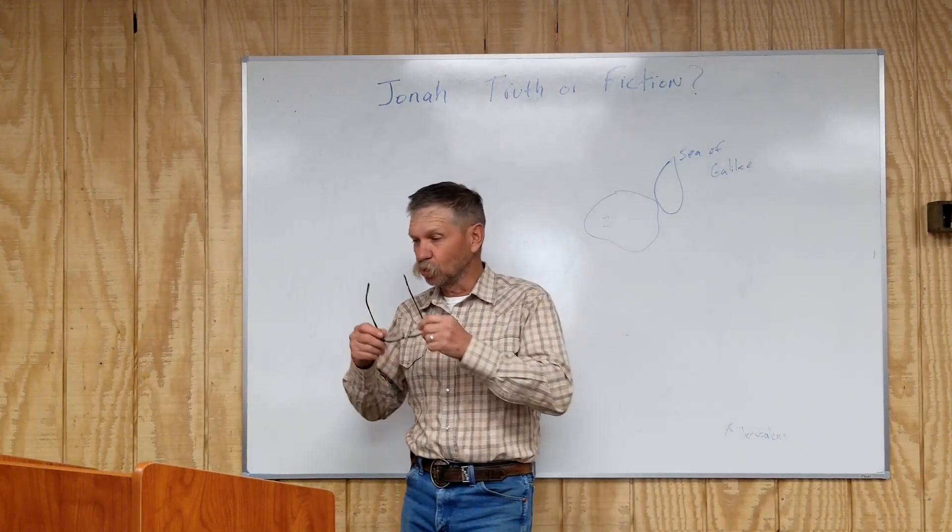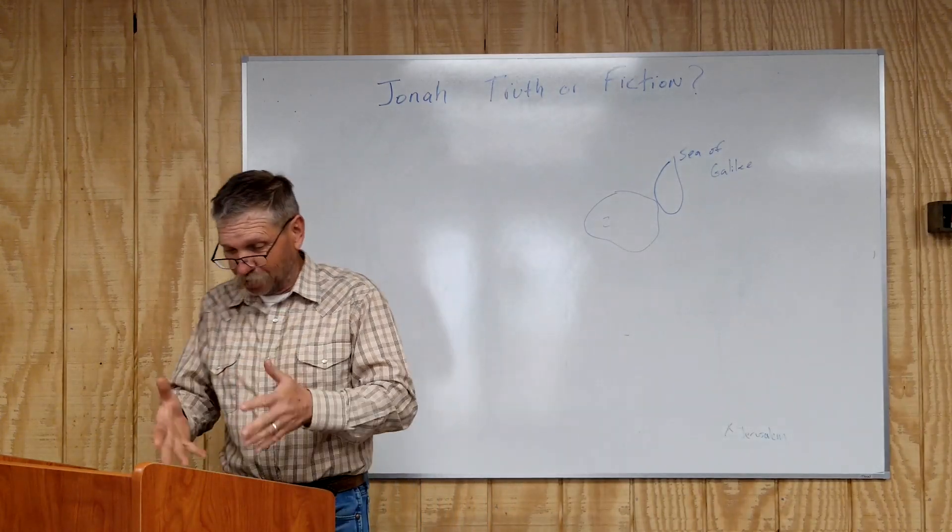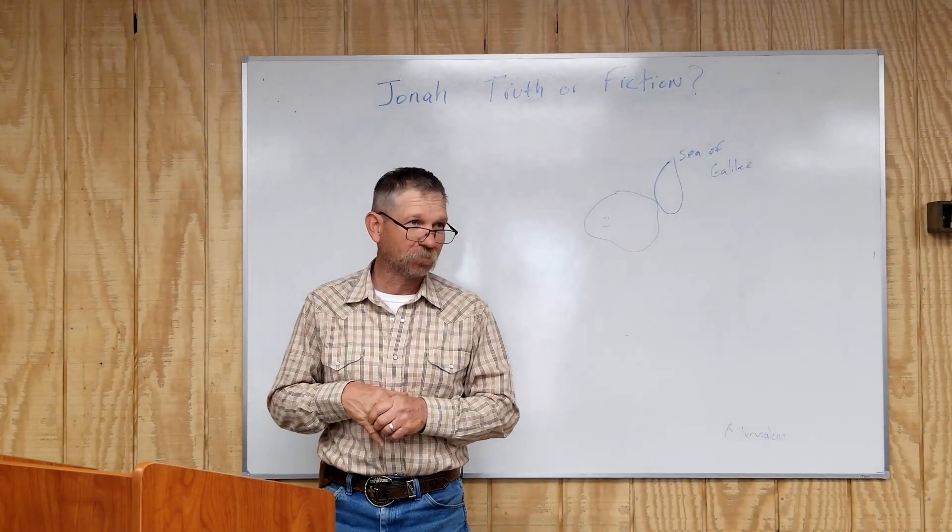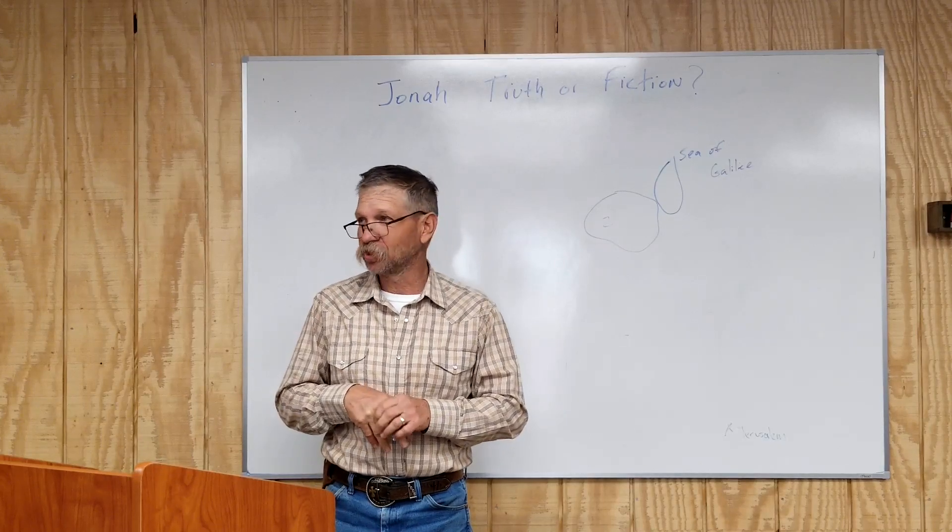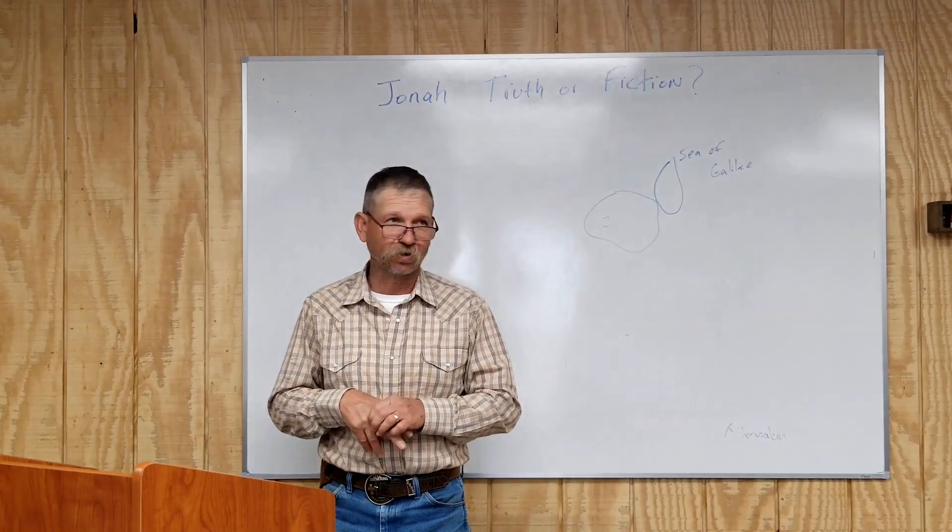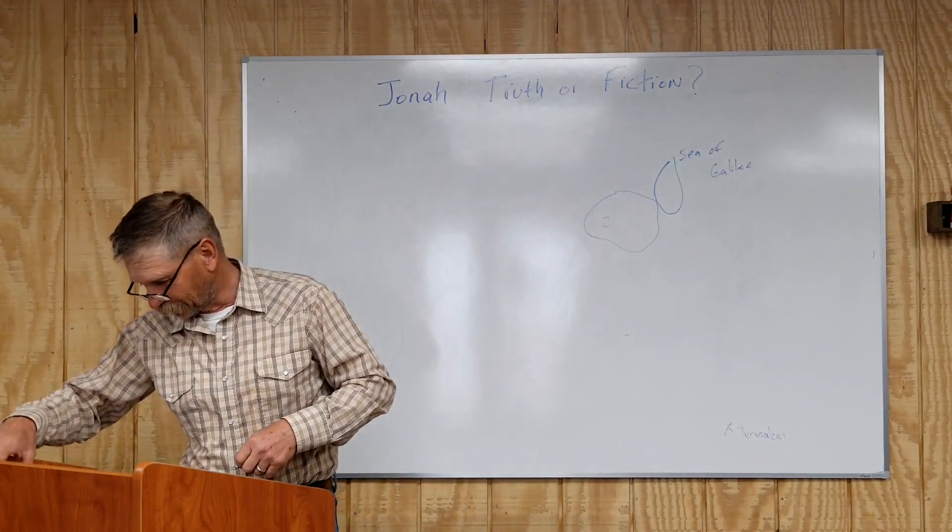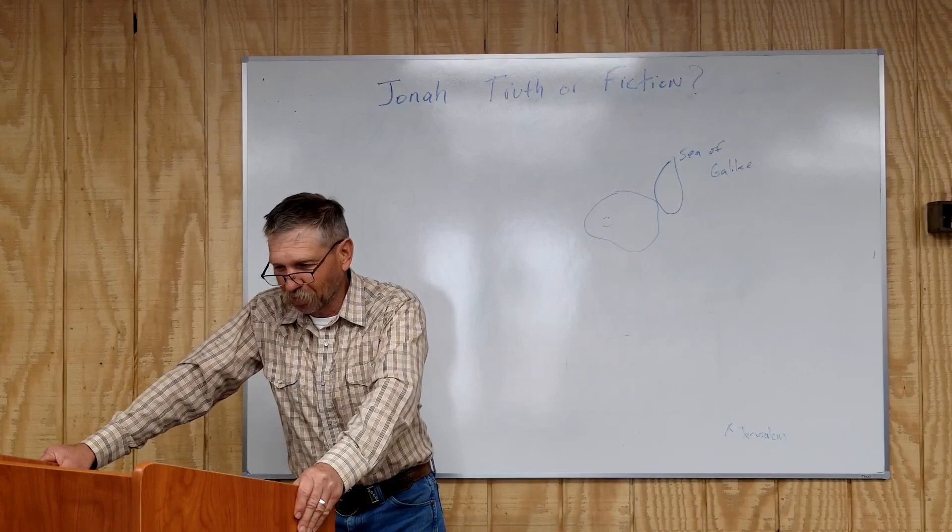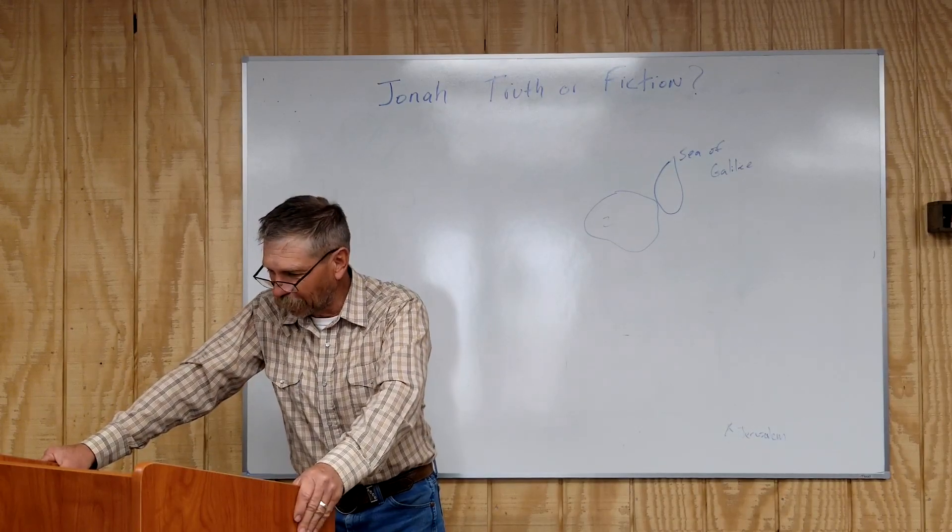You shall therefore survey the land in seven parts and bring the survey here to me, that I may cast lots for you here before the Lord our God. Now this is dividing the land. Again, they didn't know which piece of ground that God wanted what tribe to have or what family to have and so they let God pick it and then I'll read this one, Acts 1:26. And they cast their lots and the lot fell to Matthias and he was numbered with the eleven apostles. This is to replace Judas. The disciples used lots and so God used this situation to let these guys know Jonah's your man.